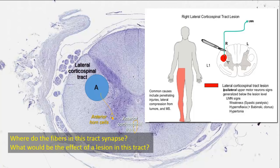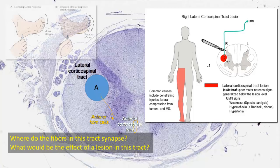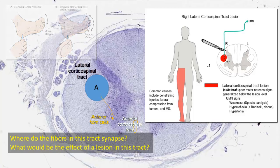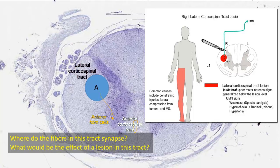This upper motor neuron lesion is characterized by varying degrees of voluntary paralysis, a positive Babinski sign — upturning of the great toe and spreading of the toes on stroking the sole of the foot — and spasticity with exaggerated tendon reflexes, all on the same side of the body below the level of the lesion.